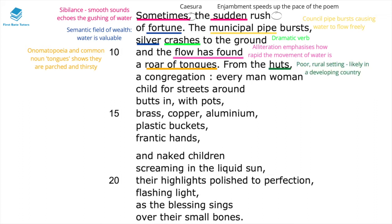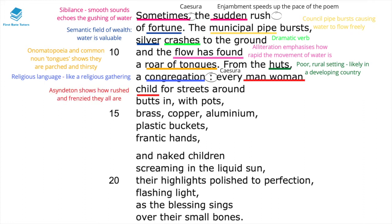There's a constant allusion to the poverty of this setting — the mention of huts shows this is a very poor, rural, likely developing-country setting. The description of the people as 'a congregation' uses religious language, like a religious gathering, showing how integral water is and how it's almost a sacred, unexpected gift. Moreover, there's a caesura that emphasises how everybody comes out — man, woman, child for streets around — and this listing through asyndeton shows just how rushed and frenzied they all are to come out and get a share of this water.